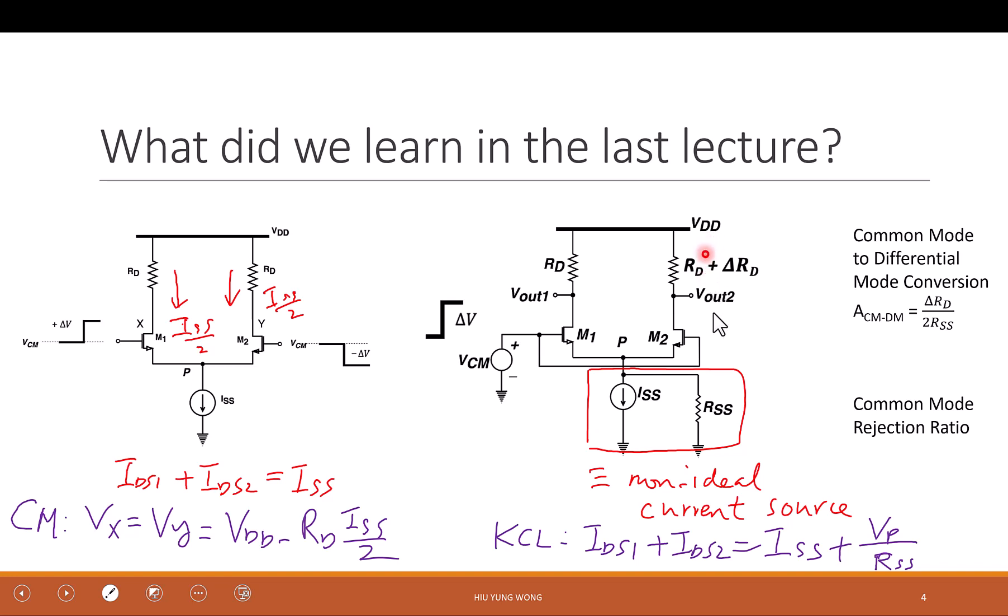And the other issue is that if I have a delta R here, it means that due to fabrication, left and right are not the same. And it is always impossible to make two things identical. They can be very similar to each other, but not identical unless we are at the elementary particle level or atom. I can say this hydrogen atom equals to this hydrogen atom. But their environment won't be the same either. So because of their difference plus this non-ideal current source, we actually will get to something called common mode to differential mode conversion.